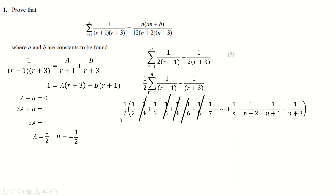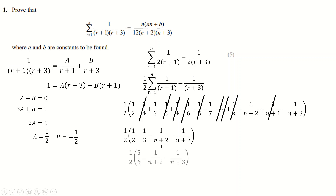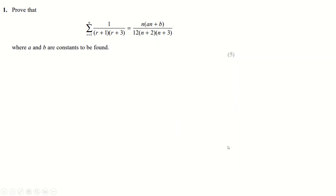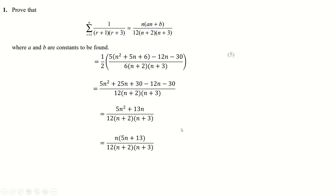This is called a telescoping series — basically everything cancels except the first two adding terms, which are too low to be cancelled because the denominators are big too quick. Likewise at the other end, everything cancels except the last two subtracting terms. So you're left with just four terms; everything else cancels. We put this together — this makes five sixths — and multiply through by the algebraic terms n plus one and n plus three. There should be a six in the denominator there, apologies for that typo. Eventually you end up with the answer they want. A nice easy warm-up question.